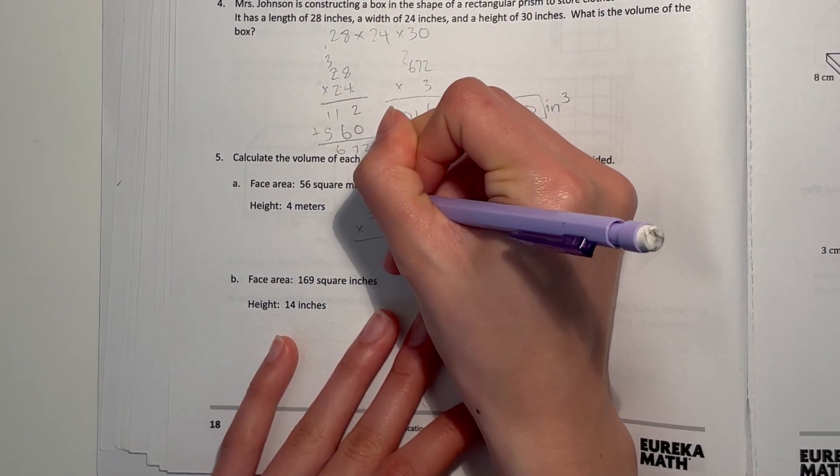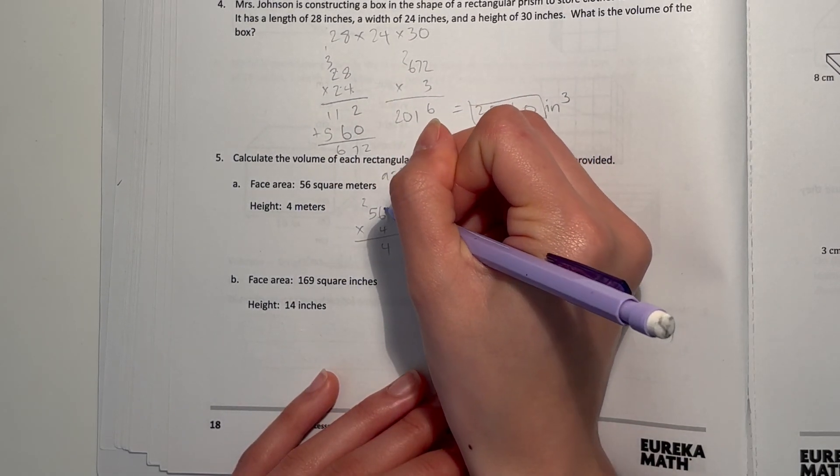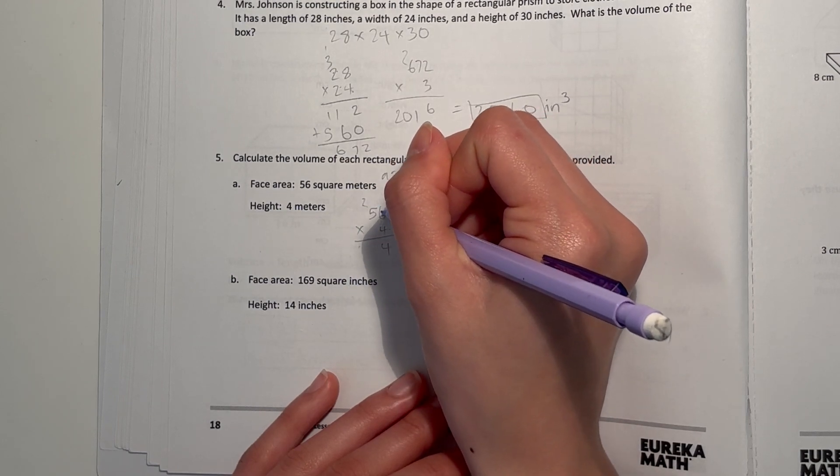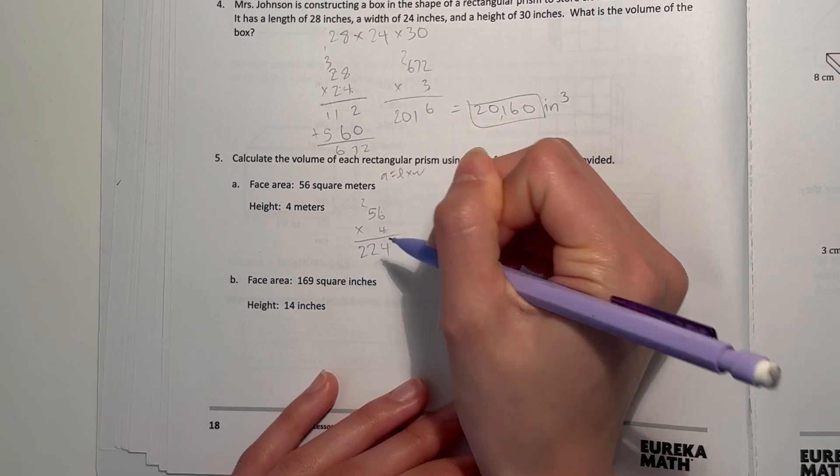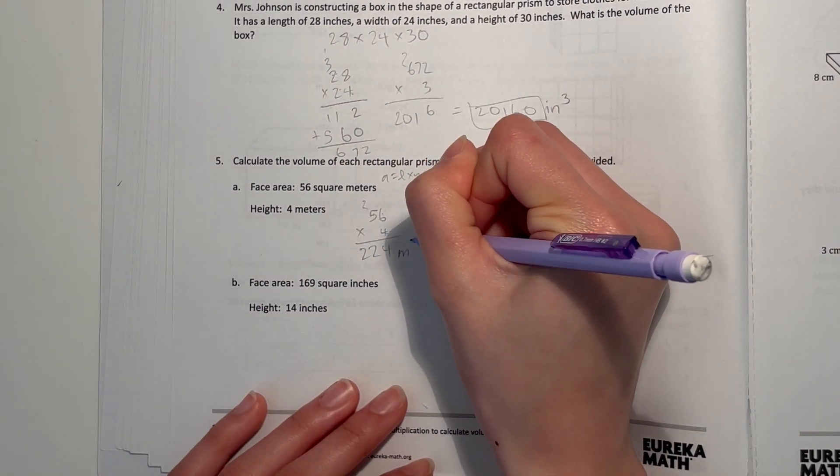Times four, 224—wait, 24 is 20, wait, is 224 meters cubed.